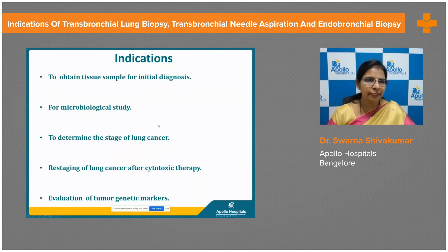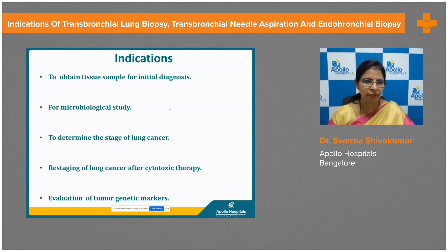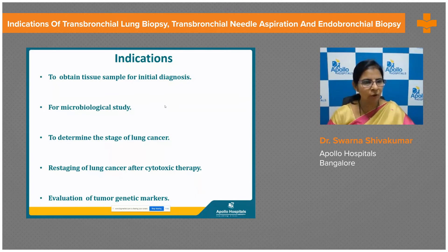Moving on to indications for TBNA, TBB, or EBB. The main indication is to obtain a tissue sample for initial diagnosis — to establish whether the etiology is infectious, inflammatory, or neoplastic. Conditions include pulmonary diseases, endobronchial masses or lesions, peribronchial lesions, mediastinal lymphadenopathy, or mediastinal masses.